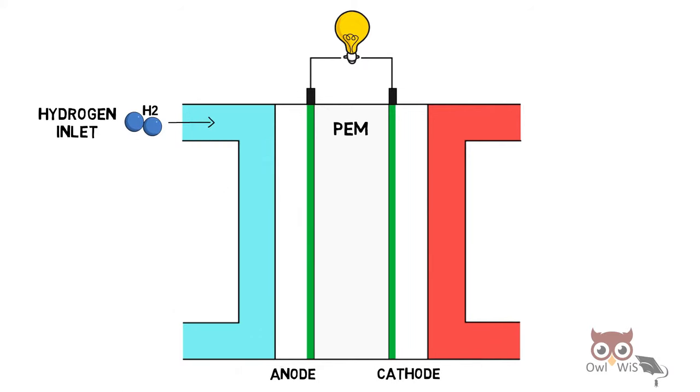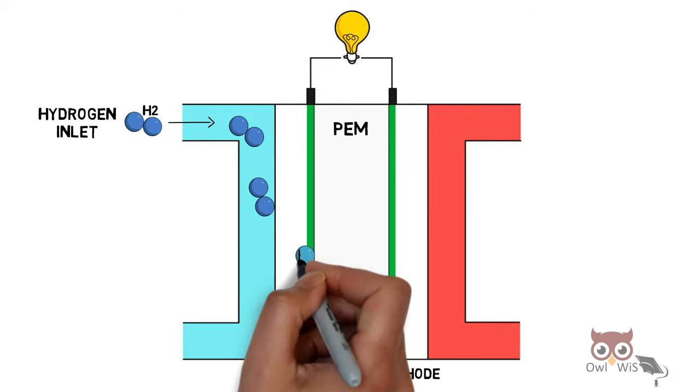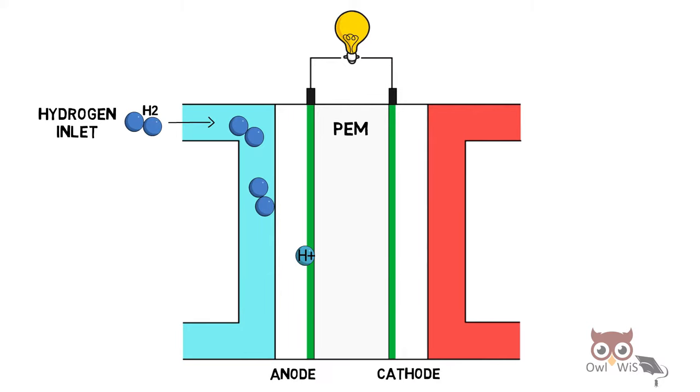Hydrogen enters through the anode and then crosses the gas diffusion layer. At the catalyst, the hydrogen is split into two protons and two electrons. All the hydrogen which enters is stripped at the catalyst into two protons and two electrons.